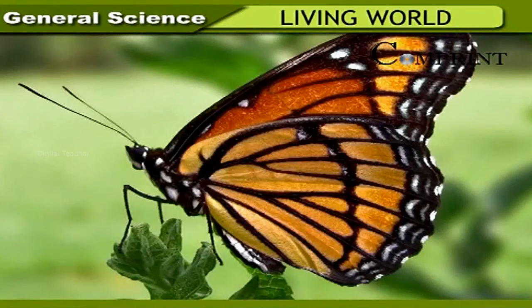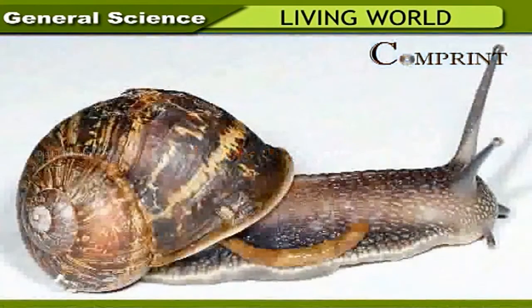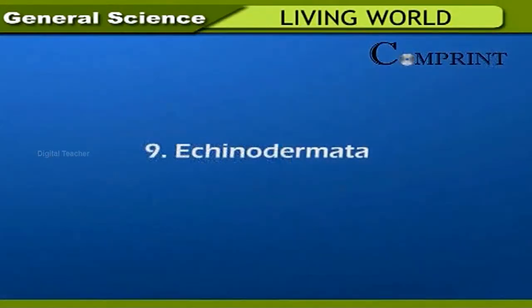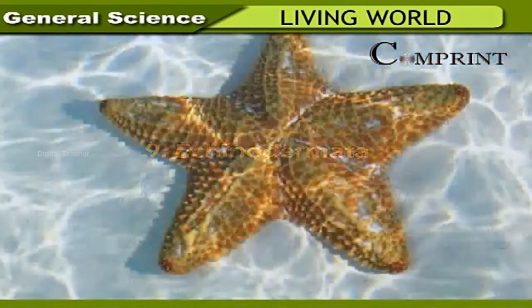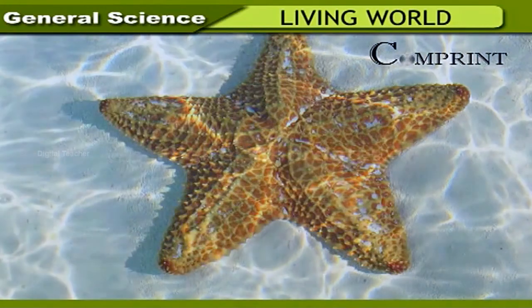Mollusca: they have a soft body enclosed in a hard shell-like structure — example: snail. Echinodermata: they have thorn-like structures on their body — examples include sea urchin, starfish, and seahorse.